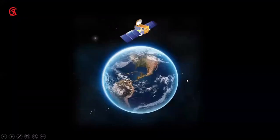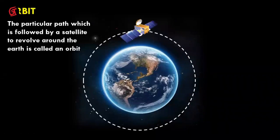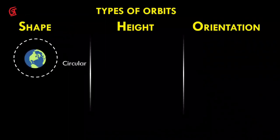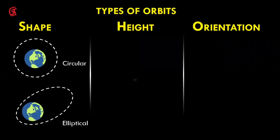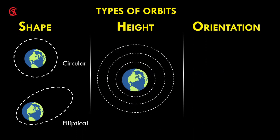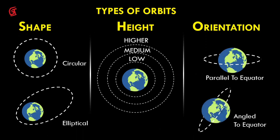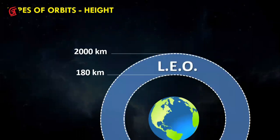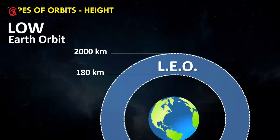Now for some revision. A satellite revolves in a circular orbit around the earth. Some satellites revolve elliptically, some according to height — starting circular and expanding their circle — and some parallel to the equator like the planet Saturn's rings. According to height, the orbit ranges from 180 kilometers from the earth up to 2,000 kilometers.